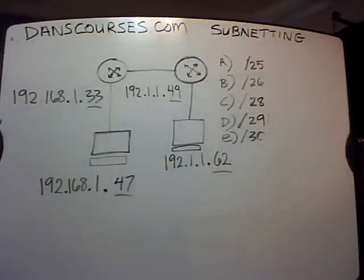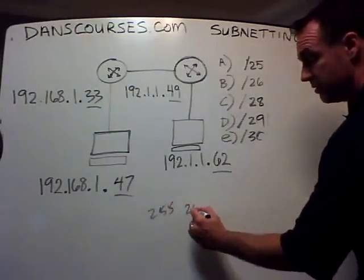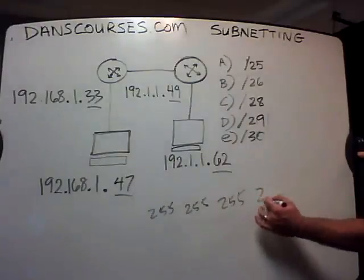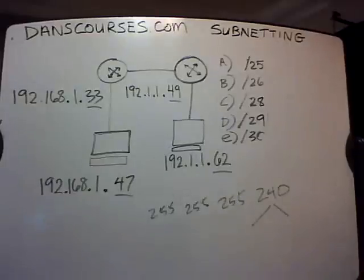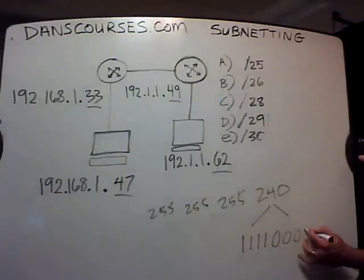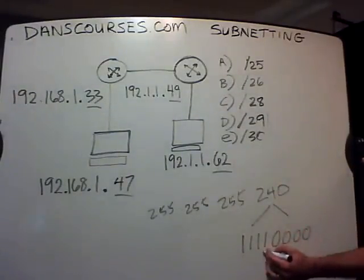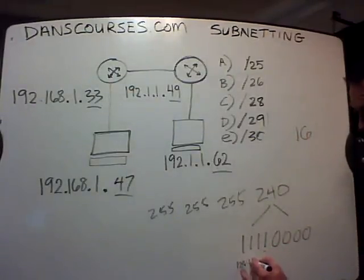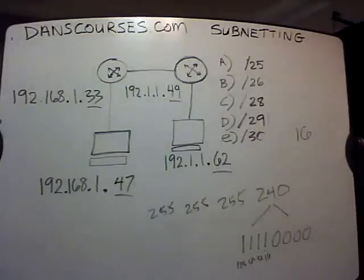The next choice is slash 28, which happens to be the right answer. With a slash 28, you've got eight bits — 255 — eight bits — 255 — eight bits — 255 — and then in the last octet: 240. In binary, that is four ones and four zeros. The magic number — the last one — is in the 16s place: 128, 64, 32, 16. The magic number is 16. So the networks go up by 16.